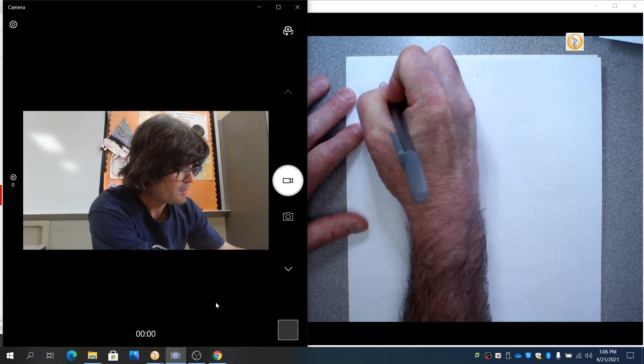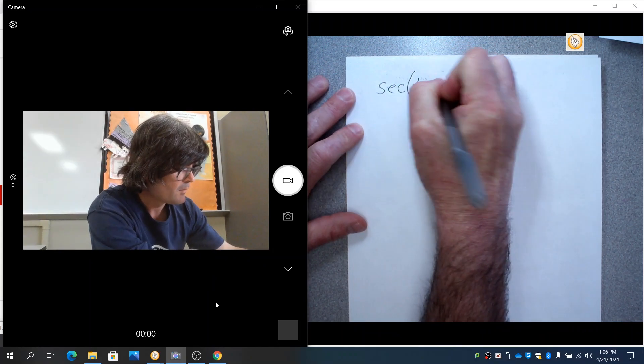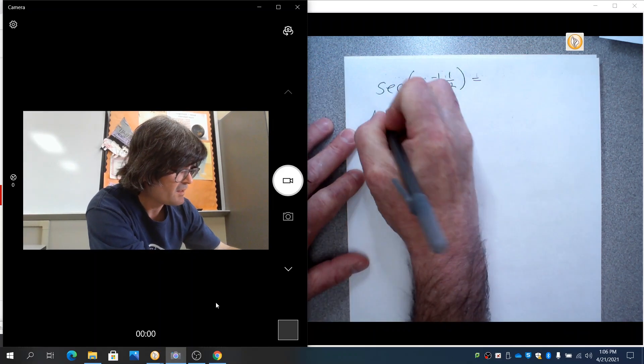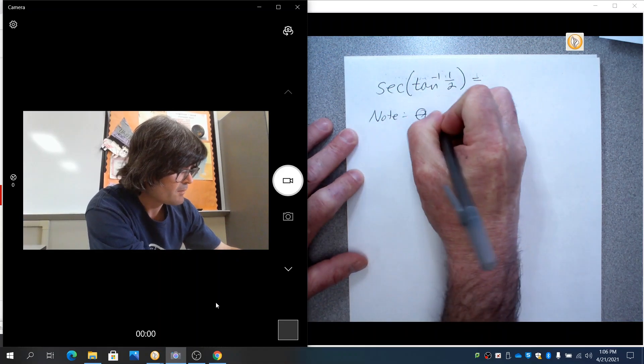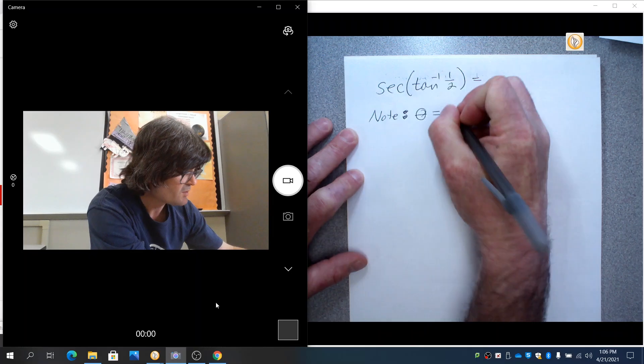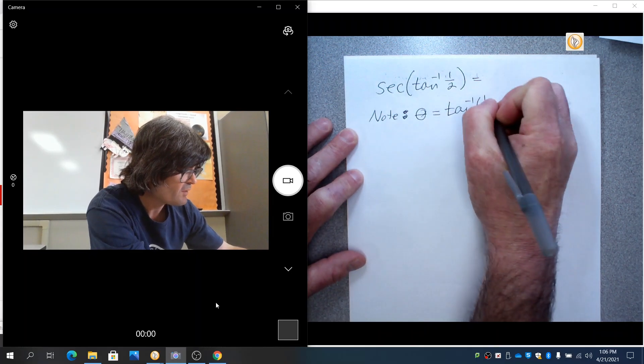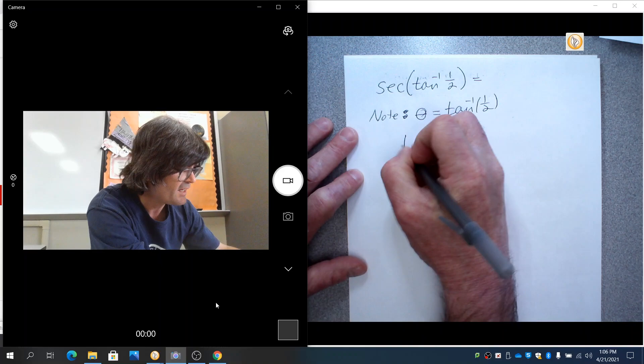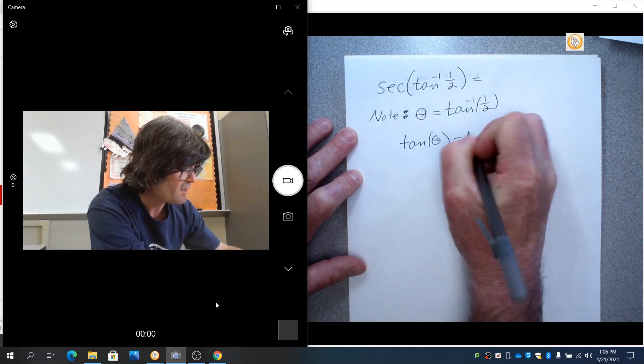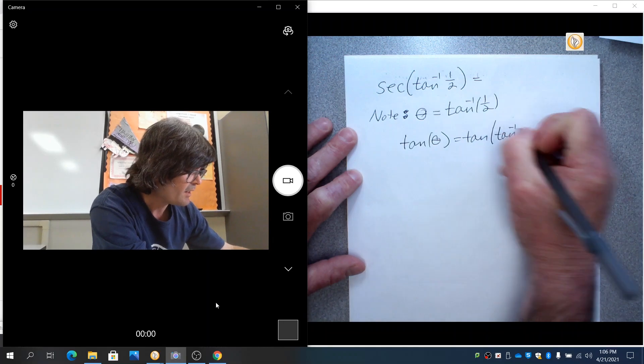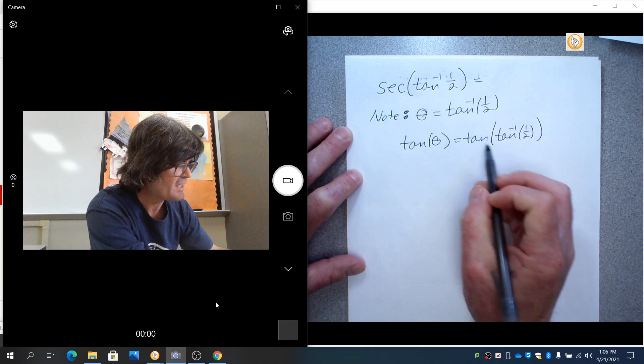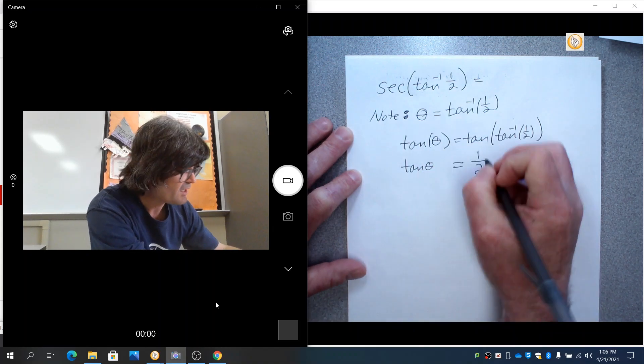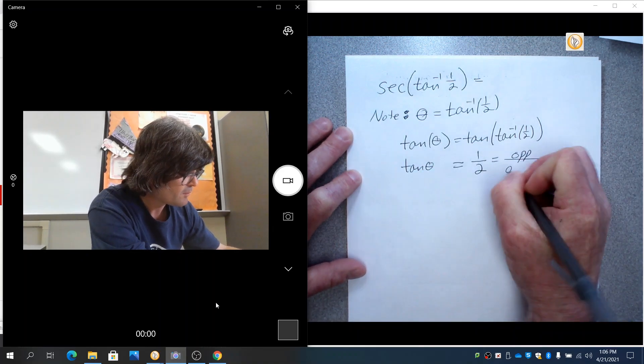Next we're going to do secant of inverse tangent of a half. First thing is to say, note, theta equals inverse tangent of a half. I know that because an inverse trig function is always an angle. So I'm just going to call that theta. I'm going to take tangent of that angle and tangent of the other side. As long as you do the same thing to both sides, you're in the clear. And this actually helps you make this a lot easier, because tangent of inverse tangent cancel out.